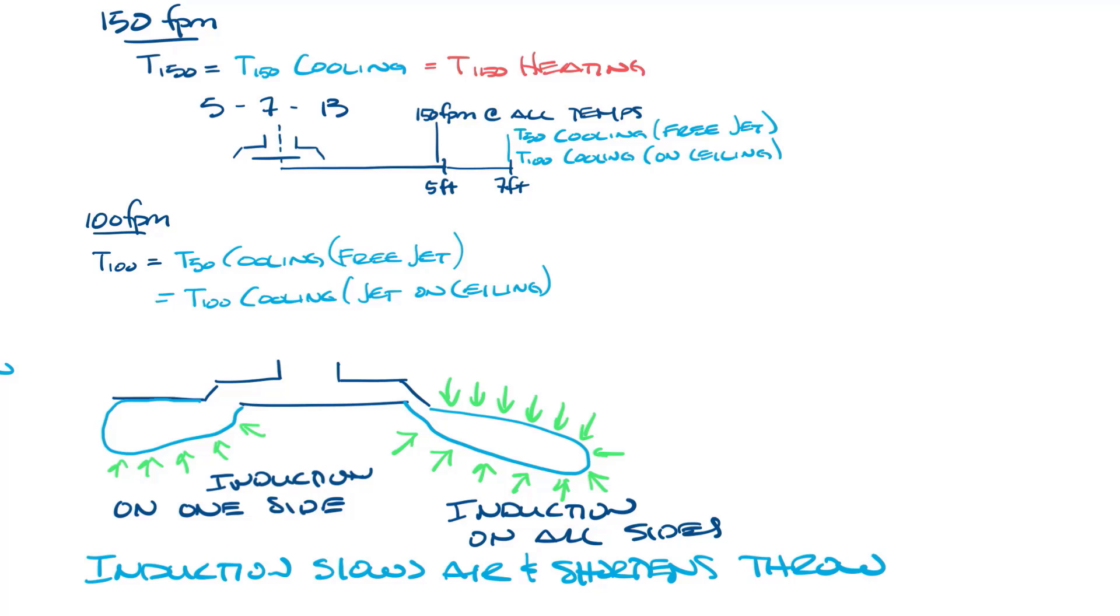50 feet per minute is important because ASHRAE recommends that the airflow in the occupied space be no more than 50 feet per minute to maintain comfort. About five years ago, ASHRAE 55 actually changed this to be less than 40 feet per minute for comfort, but the catalog data is still at 50 feet per minute.